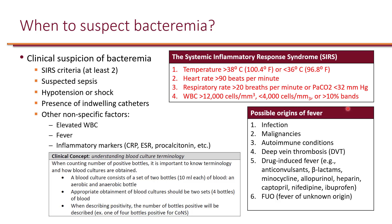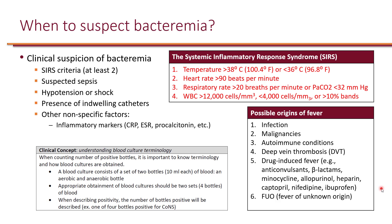Alternatively, if bands or segs are more than 10% — these are the premature neutrophils — bacteremia should also be suspected. Additionally, if the patient has sepsis, which will be discussed later, or if the patient has hypotension or shock, or presence of an indwelling catheter. Other non-specific factors include inflammatory markers such as C-reactive protein, ESR, or procalcitonin.